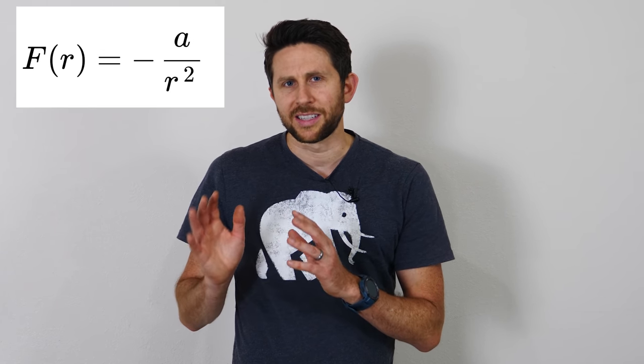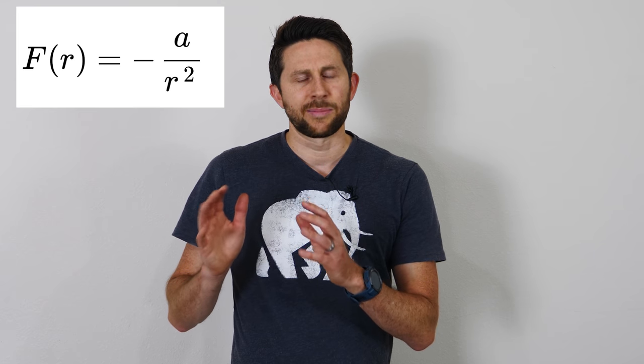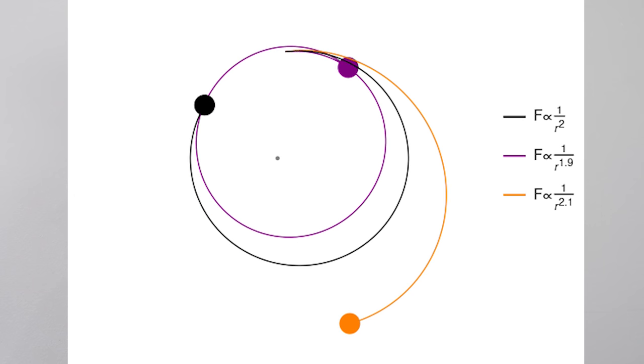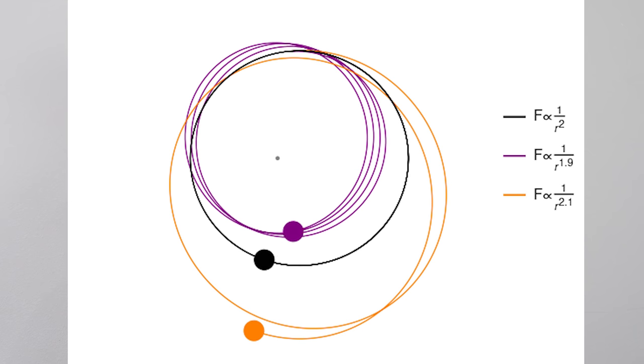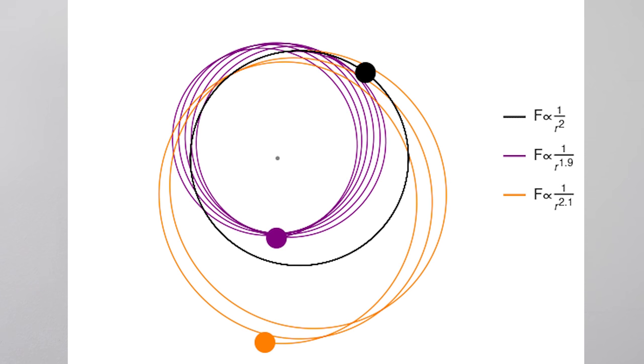The gravitational force can cause things to orbit around each other. And a similarity between these two forces is that they both scale by one over r squared. It turns out if you deviate from one over r squared just a little bit, it changes the stability of the orbits a lot. For example, in this graphic, the black ball has a force that scales by one over r squared. The purple one is one over r to the 1.9 and the orange one is one over r to the 2.1. So a force that scales by one over r squared can produce stable closed orbits.